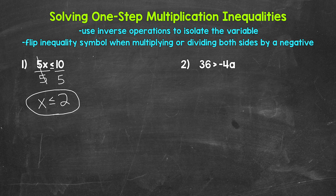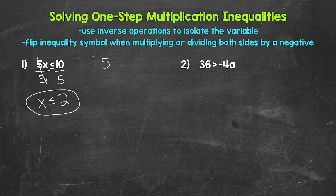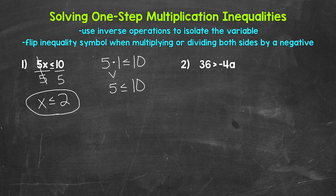x is less than or equal to 2, so any value less than or equal to 2 is a solution — it makes the inequality true. We can't check every value since there are infinitely many, but we can check one. Let's use 1, since 1 is less than or equal to 2. Plug in 1 for x: 5 times 1 is less than or equal to 10. 5 times 1 gives us 5, and 5 is less than or equal to 10, so we are correct. Our answer: x is less than or equal to 2.